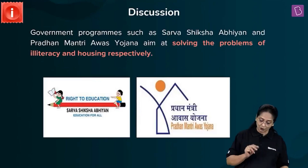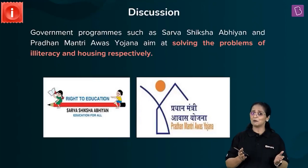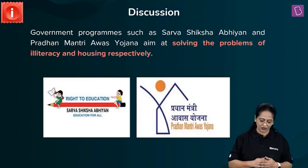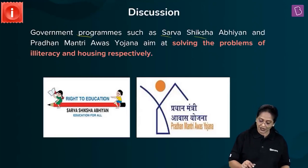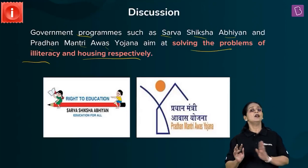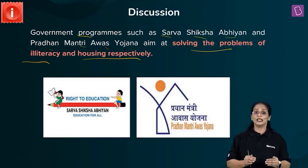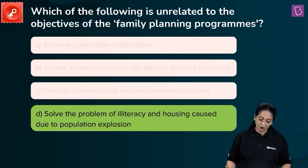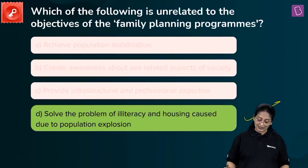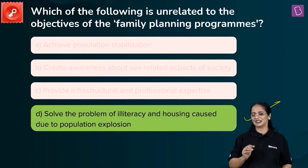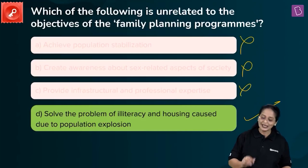What the government programs do not include in the RCH program is taking care of illiteracy or providing land. Programs such as Sarva Shiksha Abhiyan and Pradhan Mantri Awaz Yojana aim at solving problems of illiteracy and housing respectively, but this has nothing to do with the RCH or family planning programs. So, the right answer is D — solve the problem of illiteracy and housing caused due to population growth. We eliminate A, B, and C.